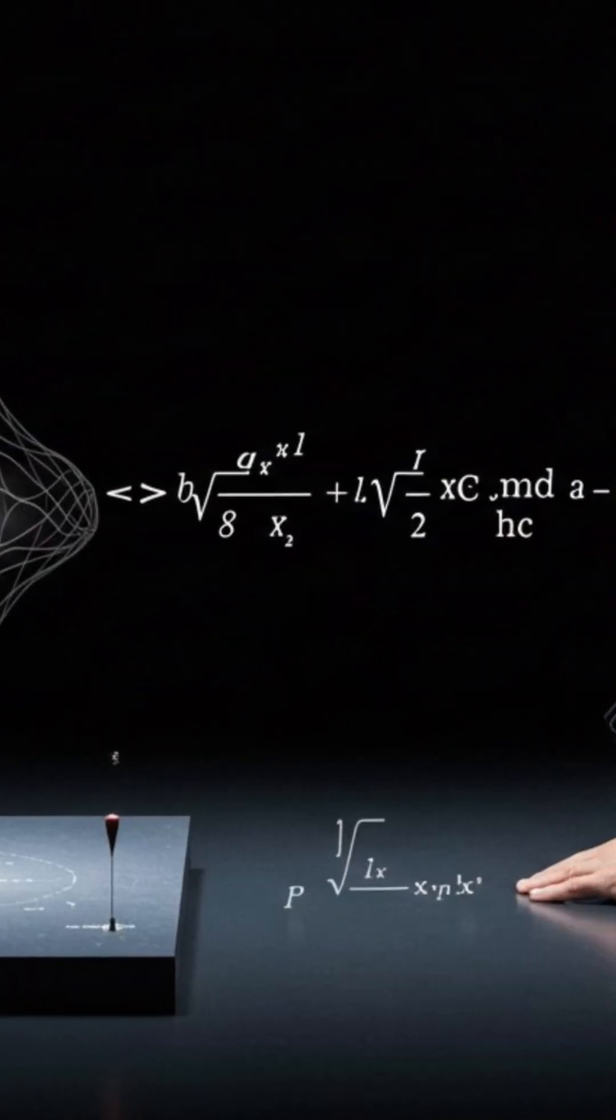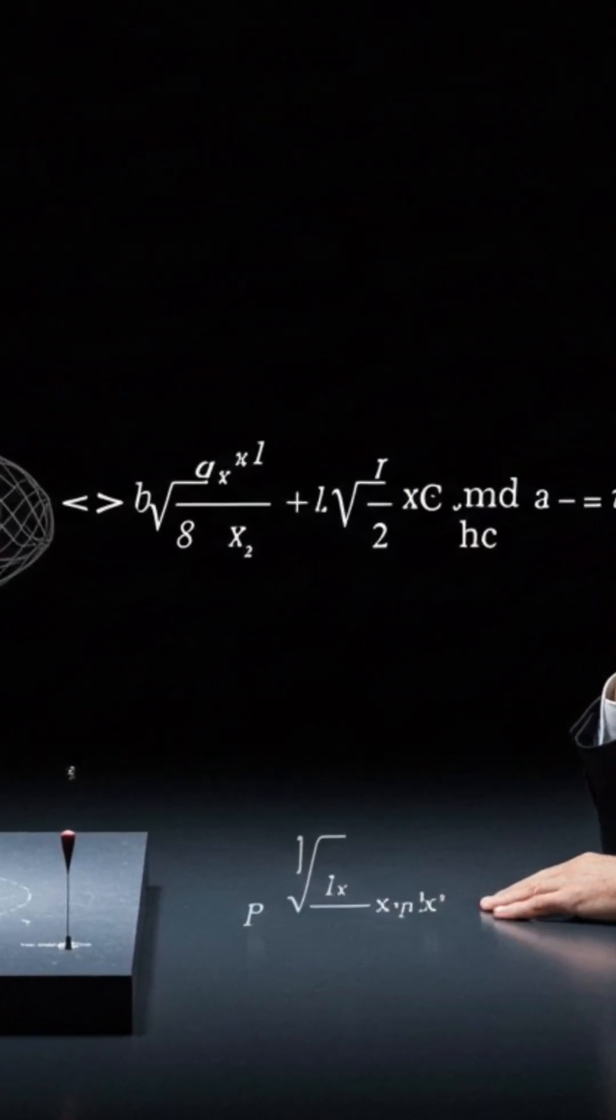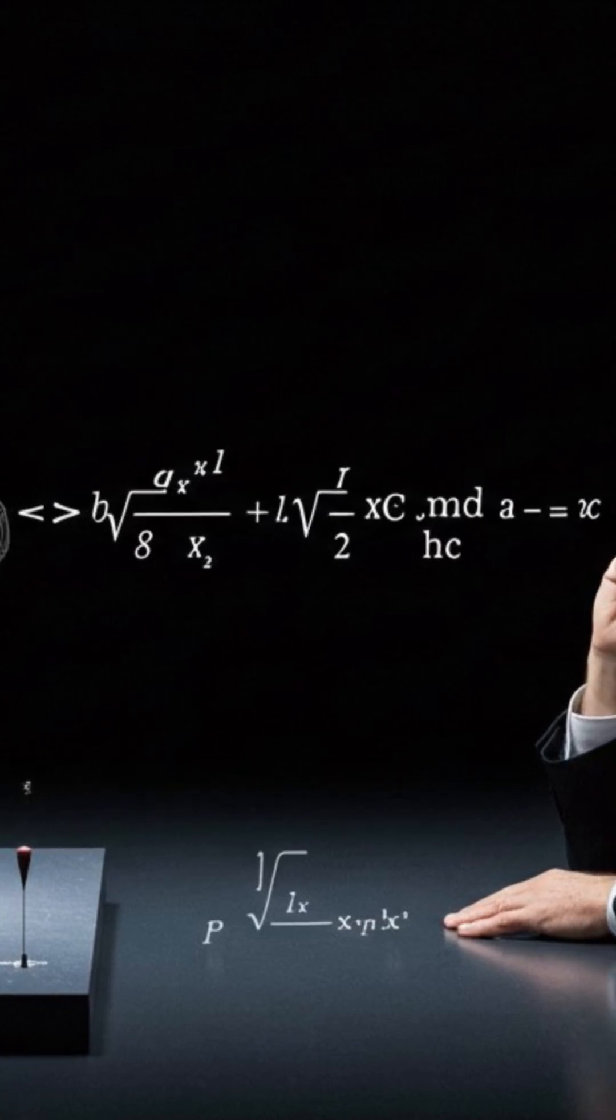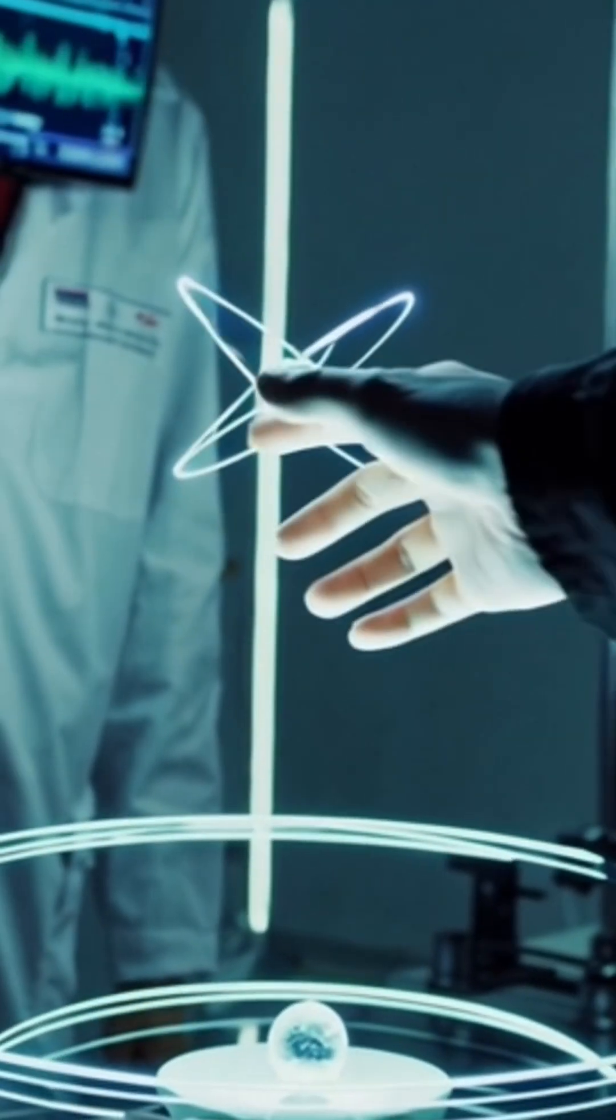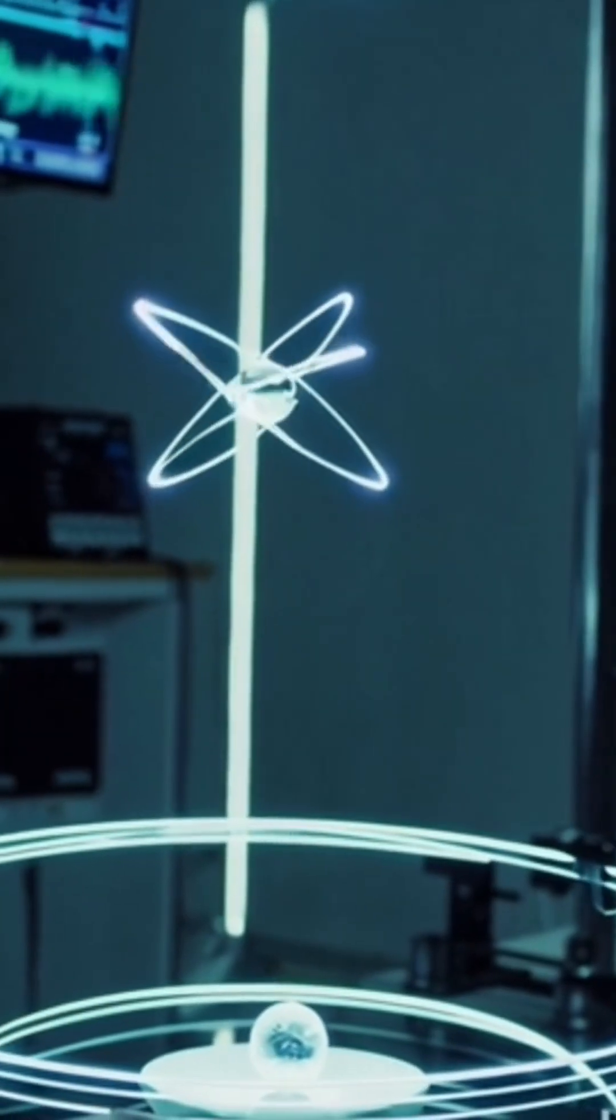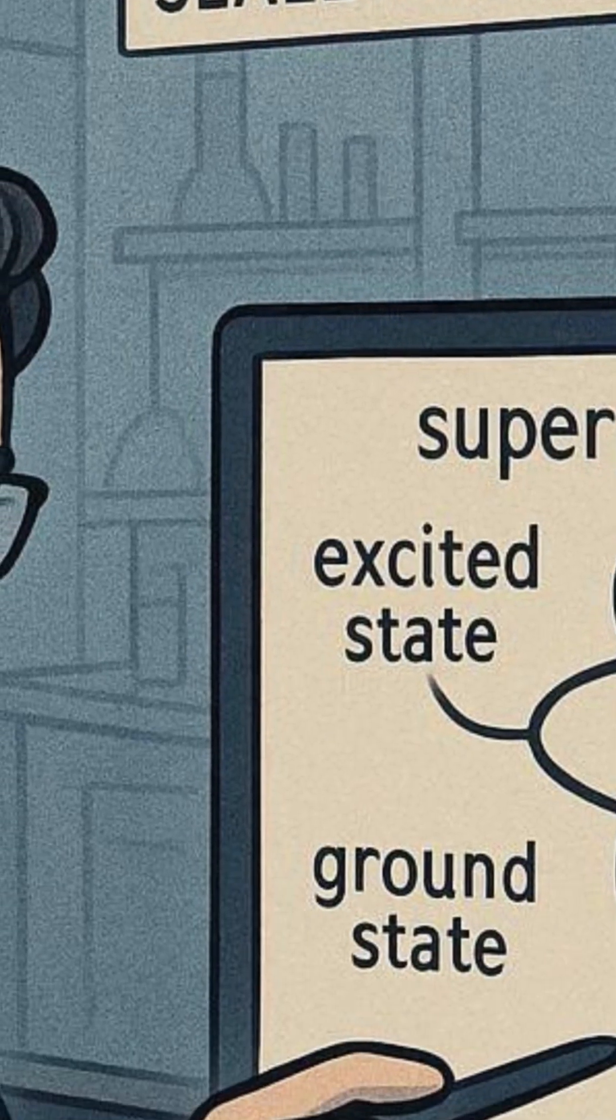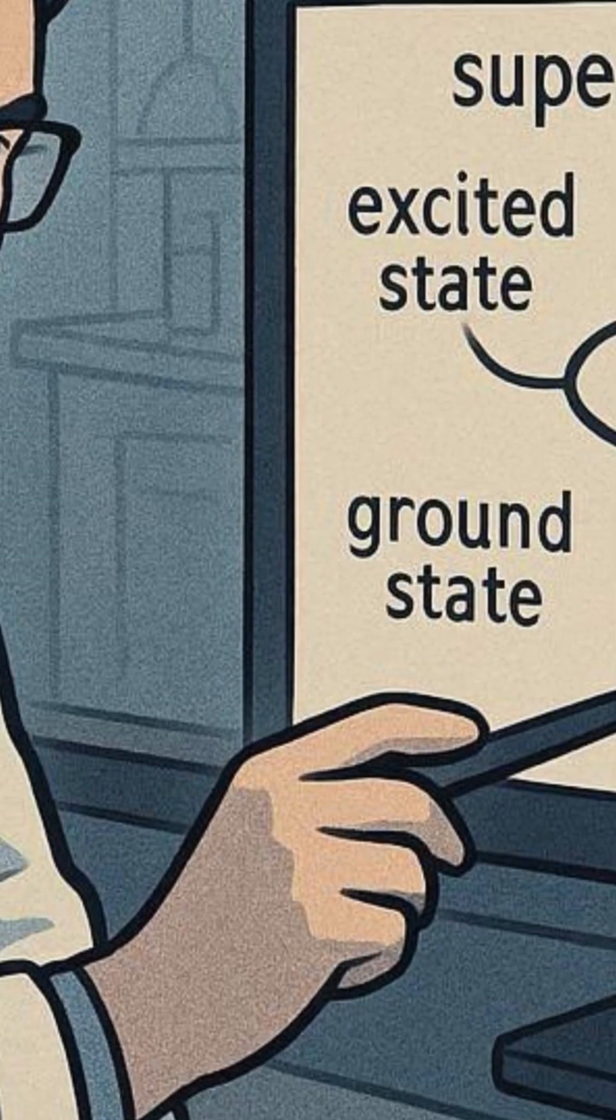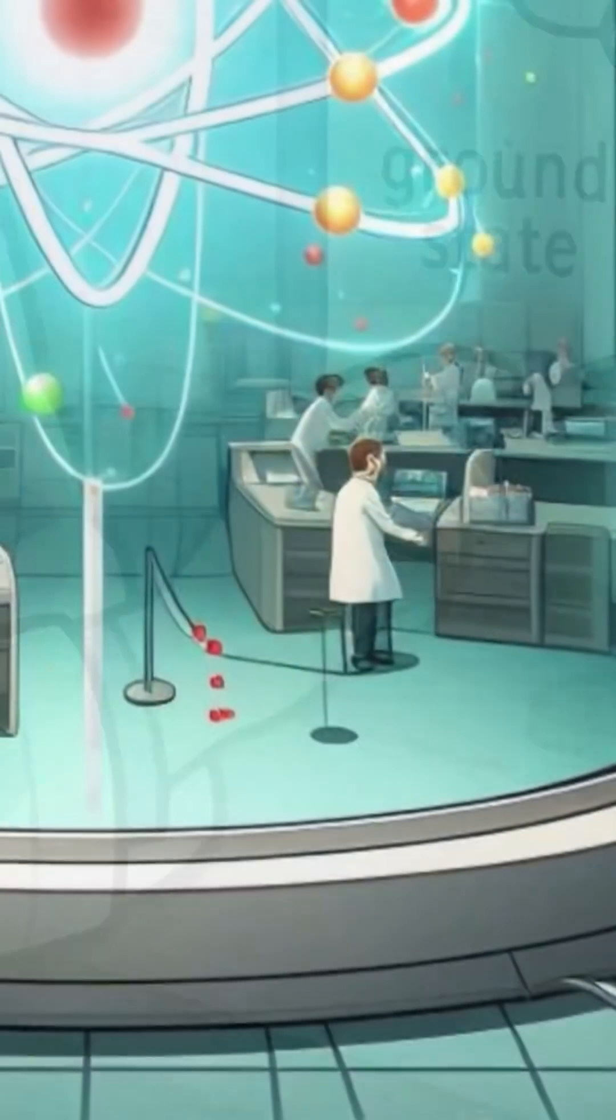The friend performs a measurement on this atom. According to the standard interpretation of quantum mechanics, the act of measurement causes the atom's wave function to collapse, forcing it into one definite state, either excited or ground. The friend, having observed the result, now knows the atom's state.